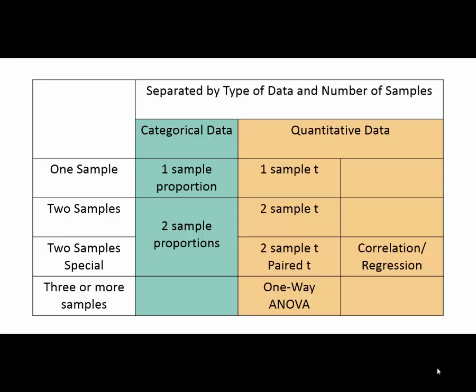Now I'm separating tests based on the two questions: categorical versus quantitative data, and whether I have one sample, two samples, two samples special, or three or more samples. With categorical data and one sample, I use a one-sample proportion test; with two samples, a two-sample proportion test — the names are pretty obvious. If you have more than two categorical samples, there's also a chi-square test — not as commonly used in healthcare, but it exists. When you have quantitative data and two samples special, we need to ask one more question.